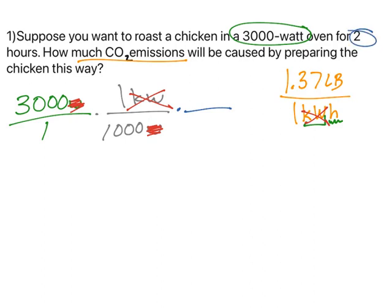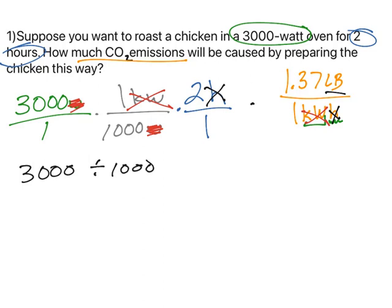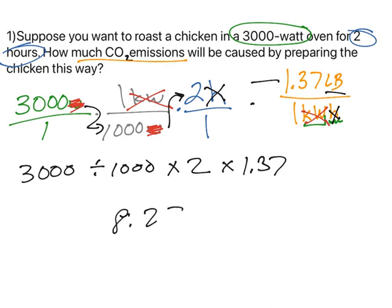We also know we're cooking for two hours. The hours cancel out with hours, and kilowatts cancel out with kilowatts. Then we're in pounds. So I take 3,000 divided by 1,000 — because it's in the denominator — times 2, times 1.37. Anything in the numerator we multiply; anything in the denominator we divide. That gives me 8.22 pounds of CO2.